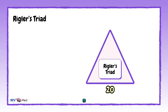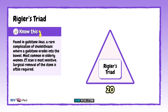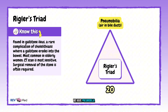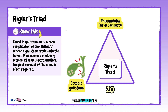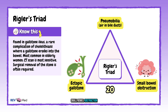Number twenty: Rigler's triad — found in gallstone ileus, a rare complication of cholelithiasis. We have pneumobilia, ectopic gallstones, and small bowel obstruction. Diagnosis is usually made on imaging, and surgery is often required.